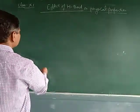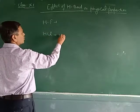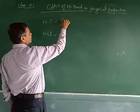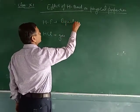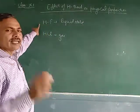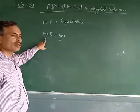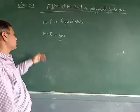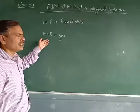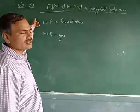Similarly, HF and HCl: hydrogen chloride (HCl) is a gas, while HF is in the liquid state. The reason is the same — in HCl there is no hydrogen bonding, so molecules are far apart and HCl exists in the gas state, while HF exists in the liquid state.